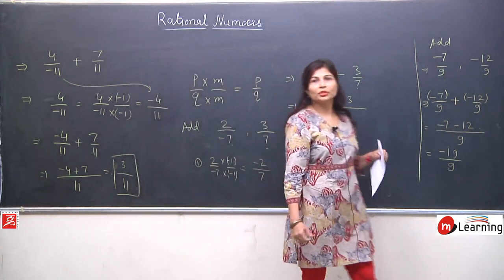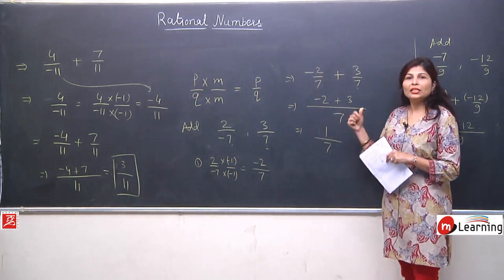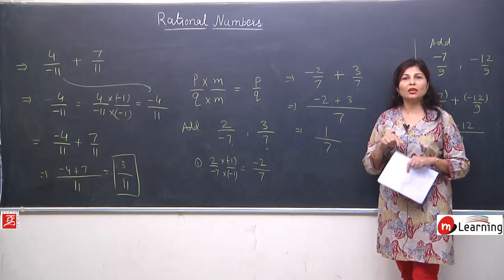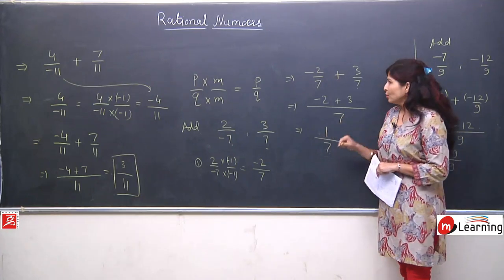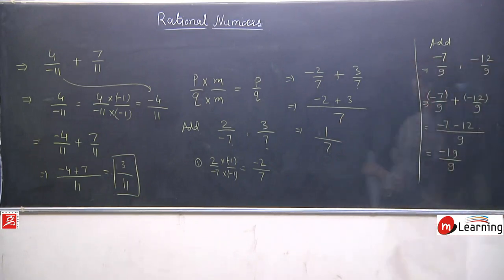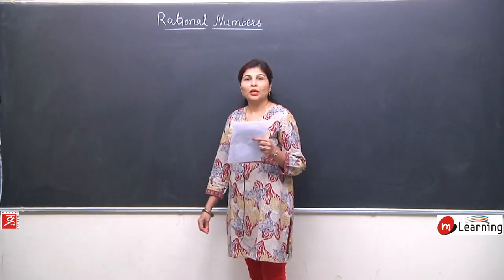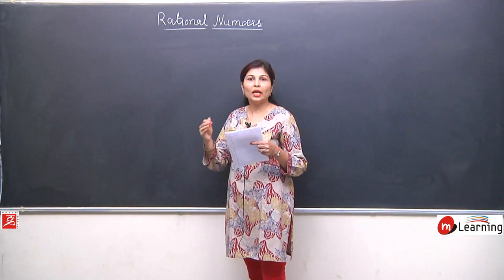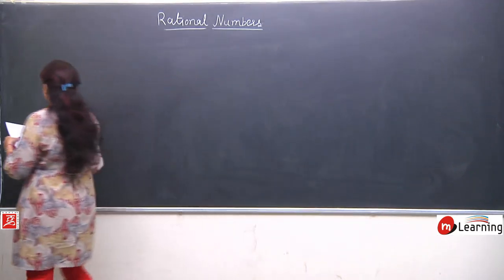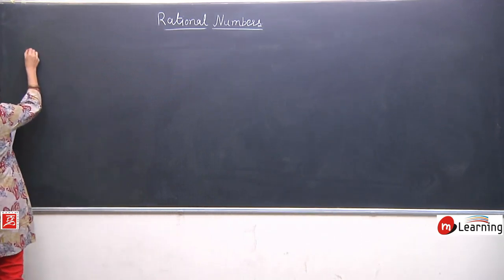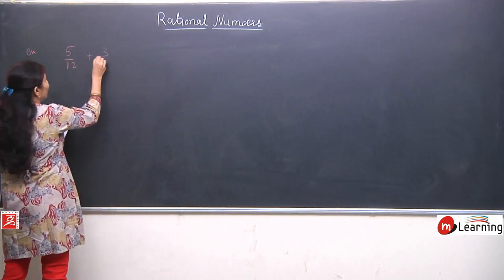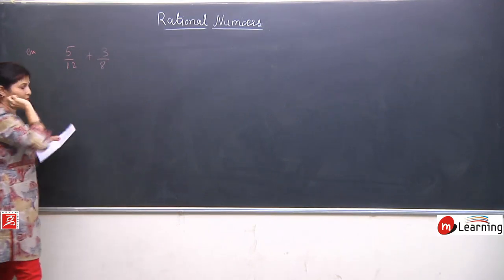These are simple properties of rational numbers — and also of integers. Here we are indirectly solving integers but in fraction form. Now, just now we solved the case of same denominators for addition and subtraction. The second property is when we have different denominators — like 5 upon 12 and 3 by 8 which we need to add.